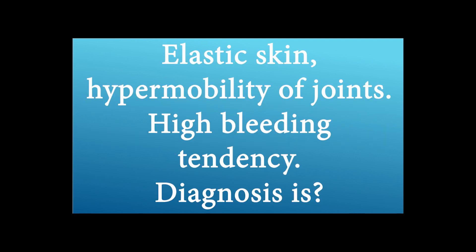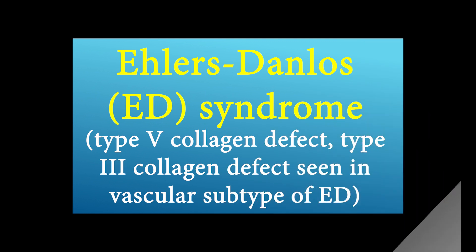Elastic skin, hypermobility of joints, and high bleeding tendency. What is the diagnosis? The answer is Ehlers-Danlos syndrome — a type 5 collagen defect, with type 3 collagen defect seen in the vascular subtype of Ehlers-Danlos.